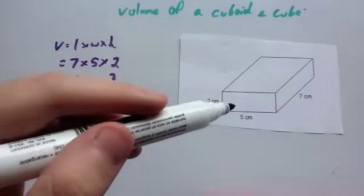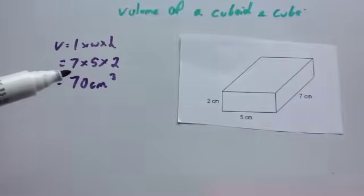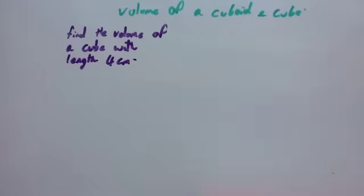To find the volume of this shape, you just multiply the three dimensions by each other: 7 times 5 times 2. Let's have a look at another example.